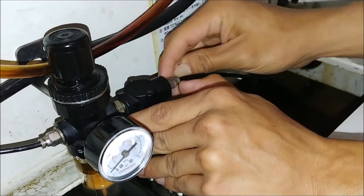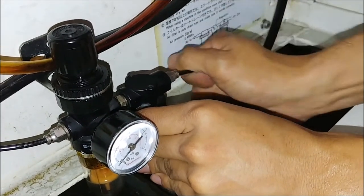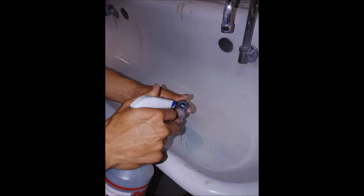Remove the airlines from the regulator by pushing in on the quick disconnect fitting with one hand and pulling the line out with the other. Disassemble the regulator and thoroughly clean all parts with warm water and Windex.